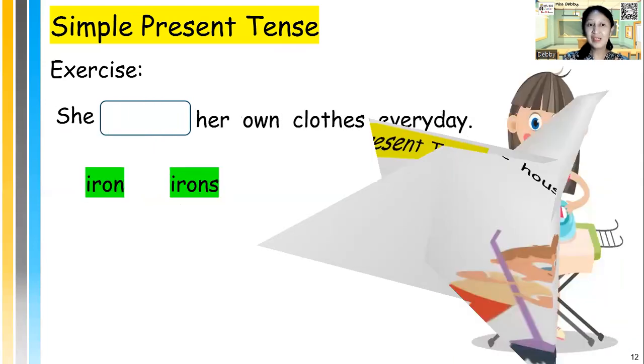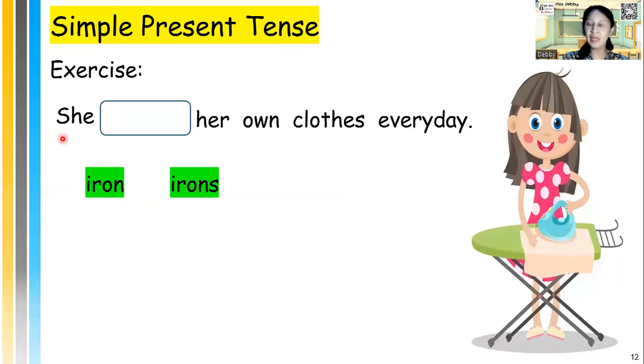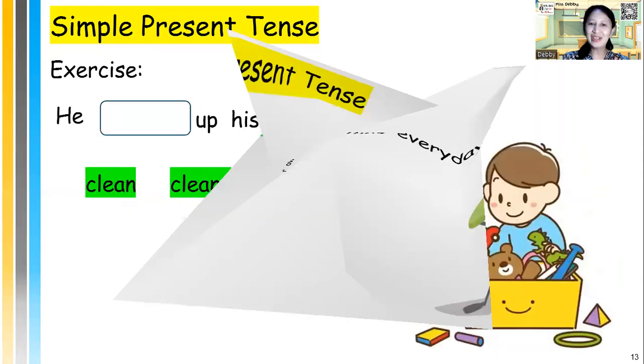What about she? If the subject she, she iron or irons her own clothes every day. She, remember, he, she, it, irons her own clothes every day. Excellent. You're so clever.